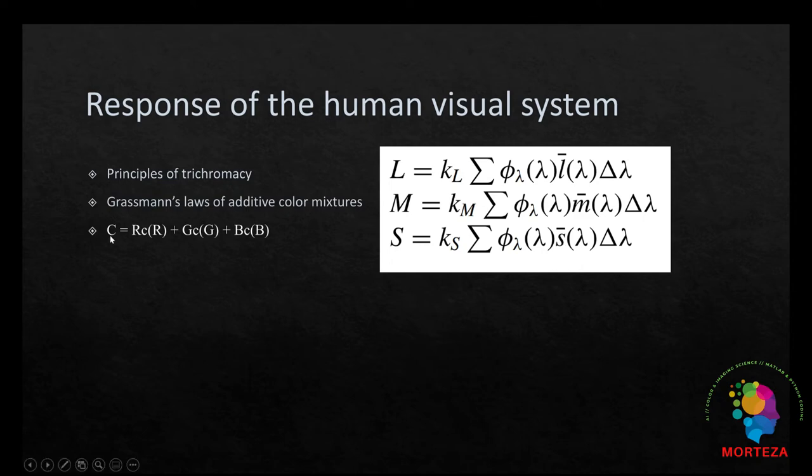So, a color C can be matched by R sub C amount of red, G sub C amount of green, and B sub C amounts of blue primaries. The units can be measured in any form that quantifies the light power.